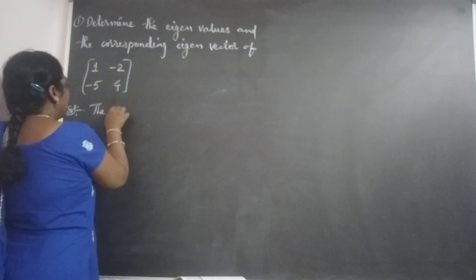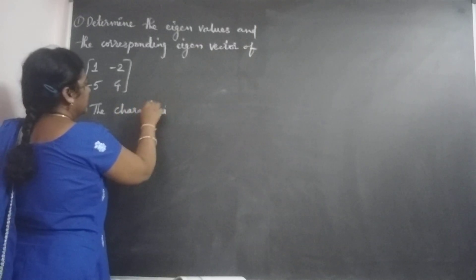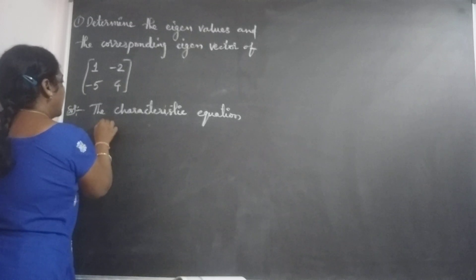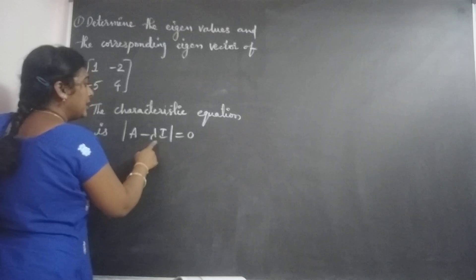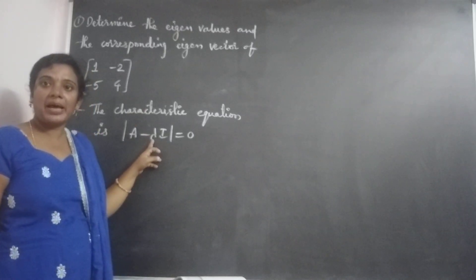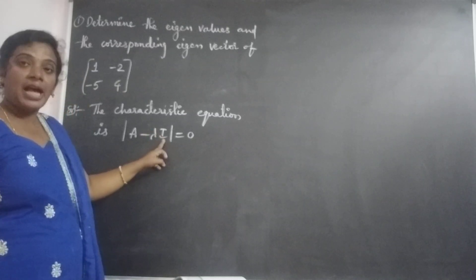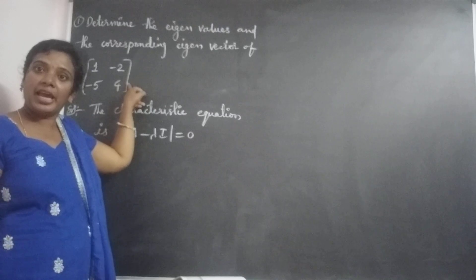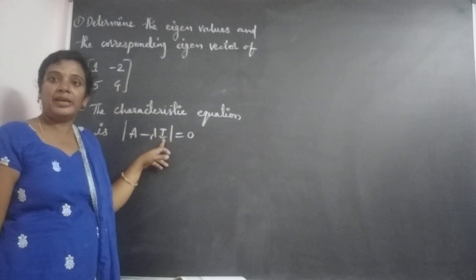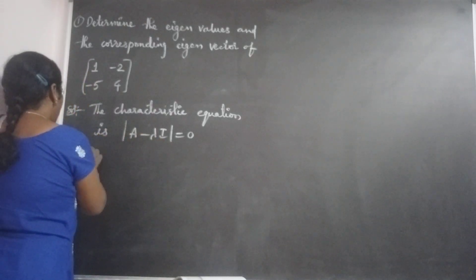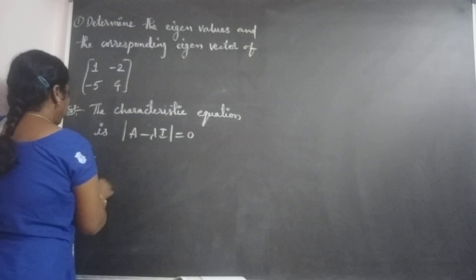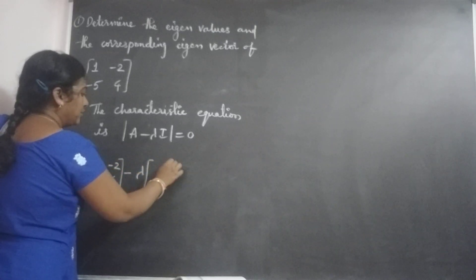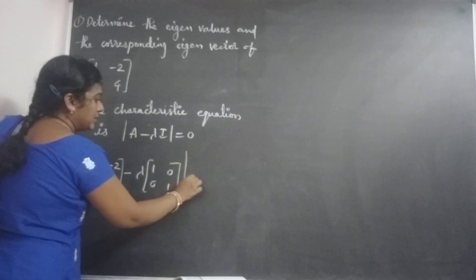What is the characteristic equation? The characteristic equation is: determinant of A minus lambda I is equal to 0. Here I is the identity matrix and lambda is a parameter. We take the identity matrix of the same order as the given matrix A. If the given matrix A is 2 by 2, then the identity matrix is also 2 by 2. So, A matrix is [1, -2; -5, 4] minus lambda times identity matrix [1, 0; 0, 1], and this determinant is equal to 0.